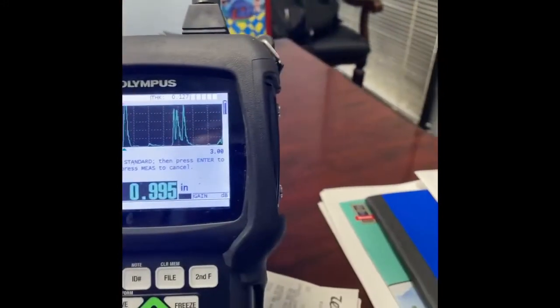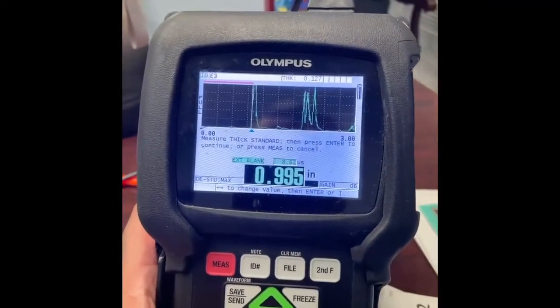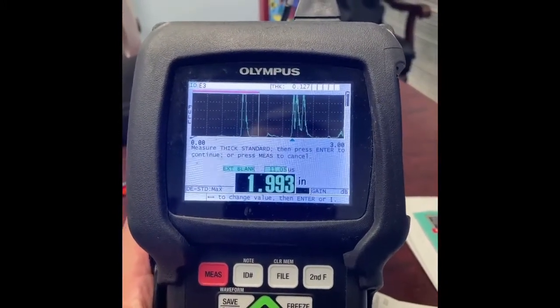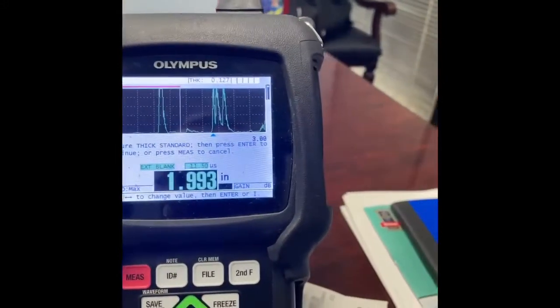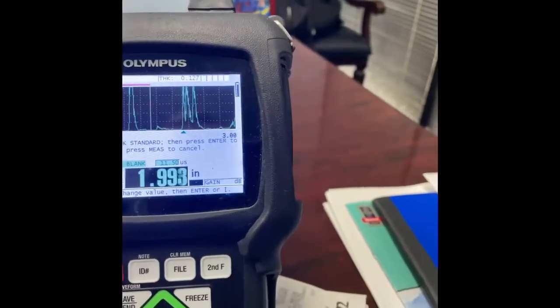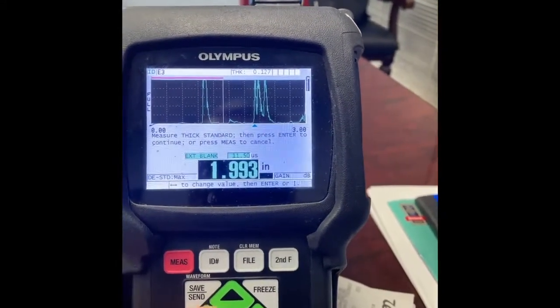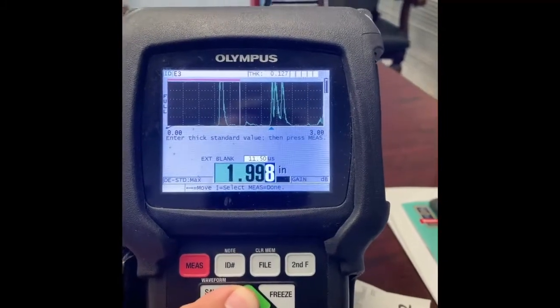But I'm going to use my extension blank and I'm going to move that gate over till it picks up on that second signal as it has already there. And I'm going to hit my enter key